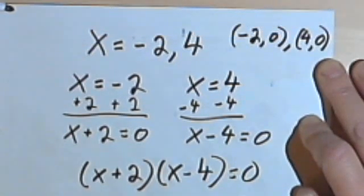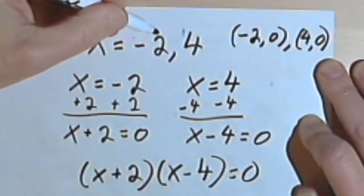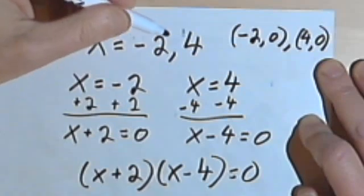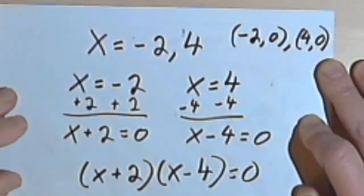and also through the point 4 comma 0. In other words, that would be the horizontal intercepts. So you might be given it as a horizontal intercept. Or you might just be told these are the solutions or the real roots. Or the zeros.